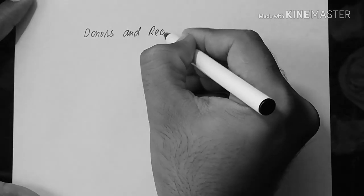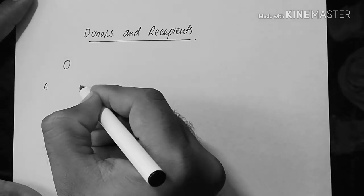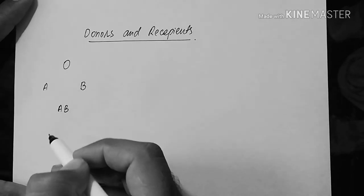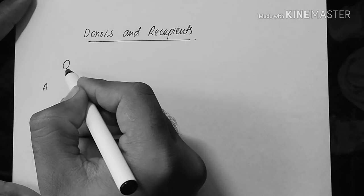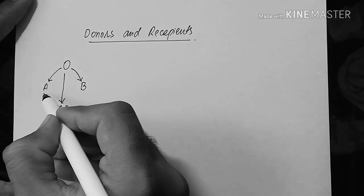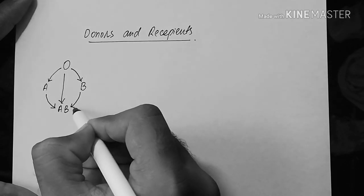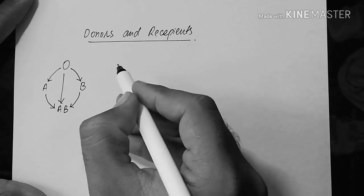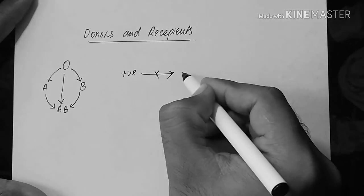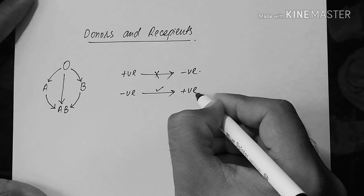Now let's talk about donors and recipients. To explain it simply, we write O at the top, A and B in the middle, and AB at the bottom. This means that the top groups can donate blood to the lower ones. O can donate to O itself and also to A, B, and AB blood groups. Likewise, A can donate to A and AB; B can donate to B and AB. Regarding Rh antigens: Rh positive blood groups cannot donate to Rh negative blood groups, but Rh negative blood groups can donate to Rh positive blood groups.